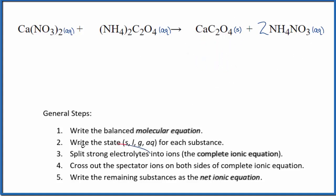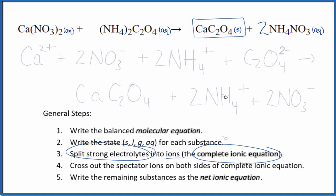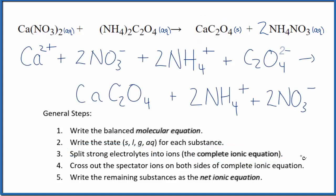Once we have the states, we can split the strong electrolytes into ions for the complete ionic equation. We'll split all of these except the solid here into ions. Let's do that. So this is our complete ionic equation. Note we didn't split the solid apart in the complete ionic equation.